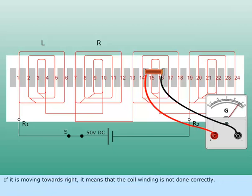If it is moving towards right, it means that the coil winding is not done correctly. Necessary corrections have to be done or you will have to rewind the motor.